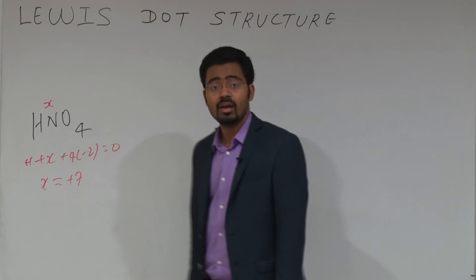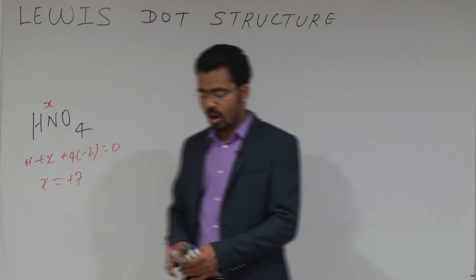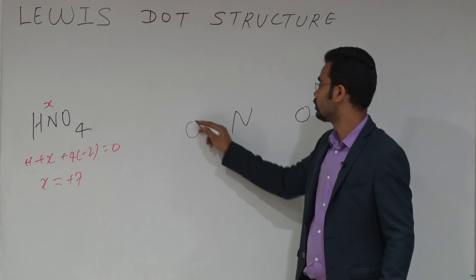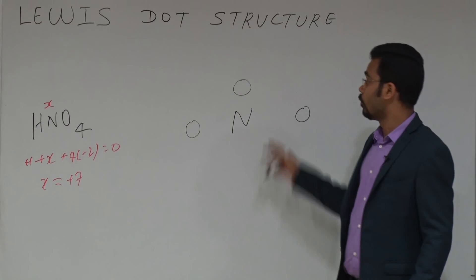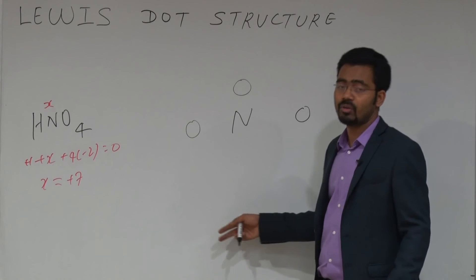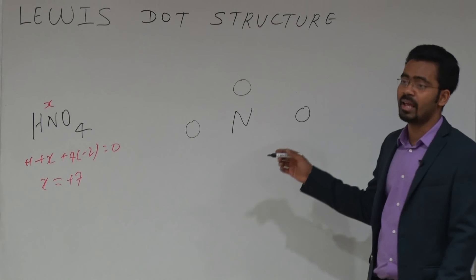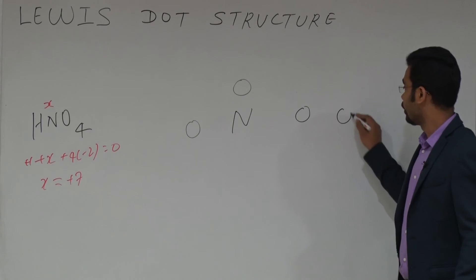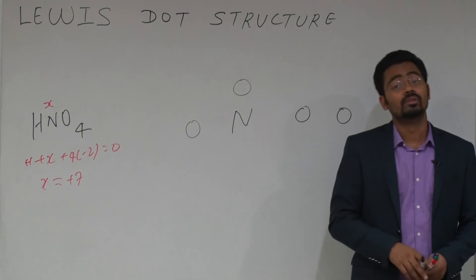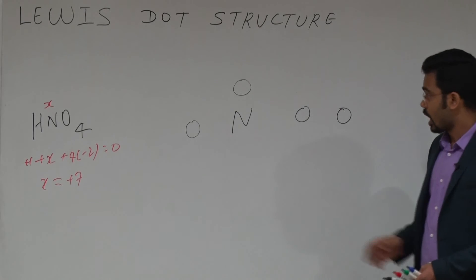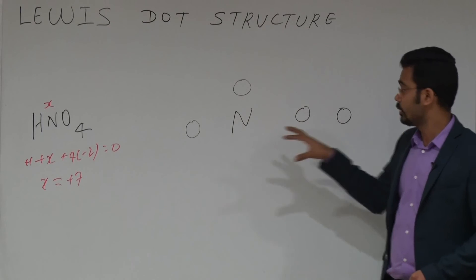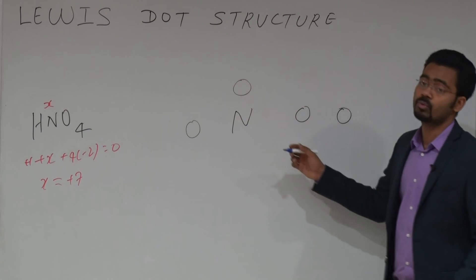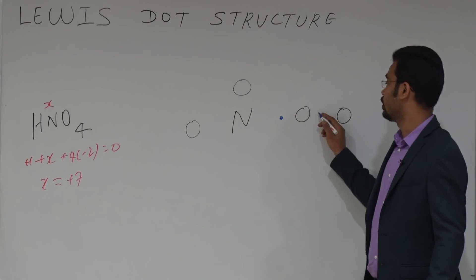Since there is a peroxide linkage, there is a bond between oxygen and oxygen. Now put nitrogen here and oxygens symmetrically. You cannot put the fourth oxygen directly on nitrogen because nitrogen never combines with four separate oxygens at once. So one peroxide linkage means the other oxygen must be bonded to the peroxide oxygen. Hydrogen must be combined with oxygen — either this oxygen or that oxygen.